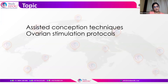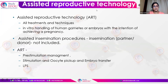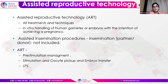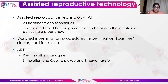This is based on the ASHRAE guideline. What is meant by assisted reproductive techniques? Assisted reproductive technology is all the treatments and techniques that involve the in vitro — that is, outside — handling of human gametes or embryos with an intention to achieve a pregnancy. Remember, assisted insemination procedures, either partner or donor, are not included in assisted reproductive technology as per ASHRAE.